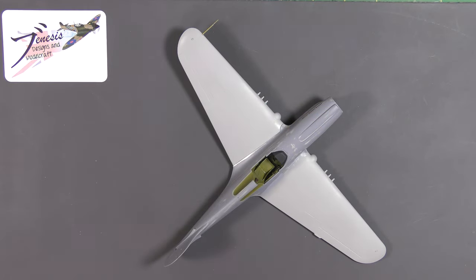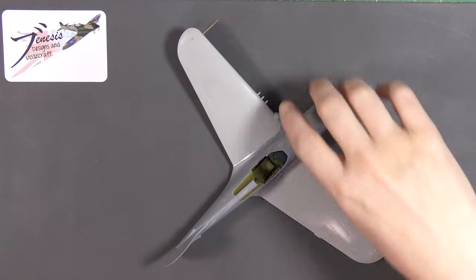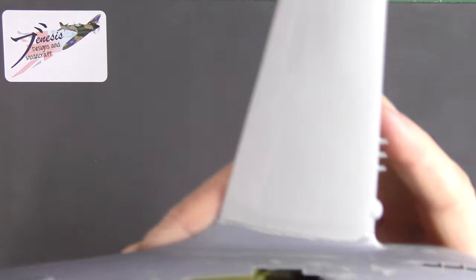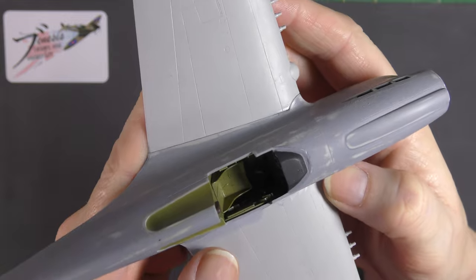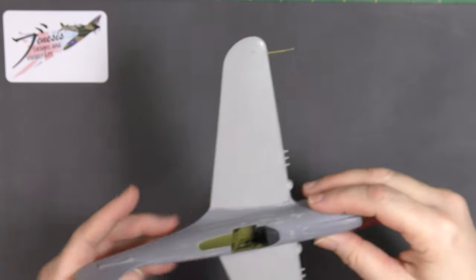Hello and welcome back to the Genesis Designs and Modelcraft Bench and another Book of Genesis video. Today I want to show you, hopefully quite quickly, how to really quickly and easily fill small gaps of the type you can see here on this wing root. This is the newly released Italeri P-40 E/K.